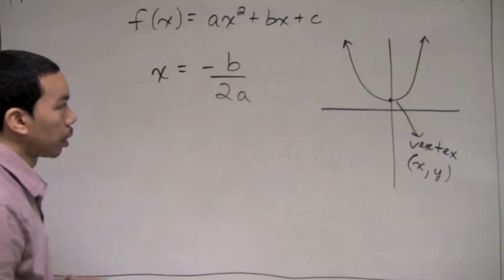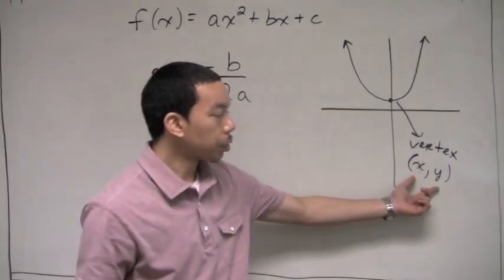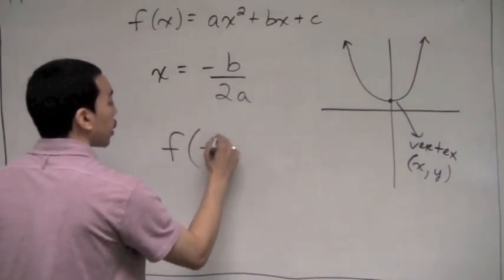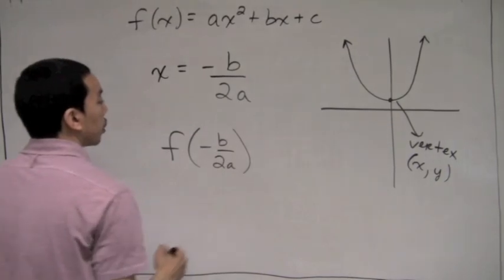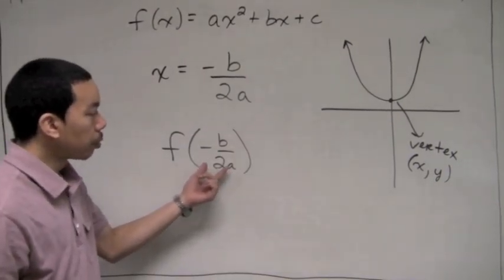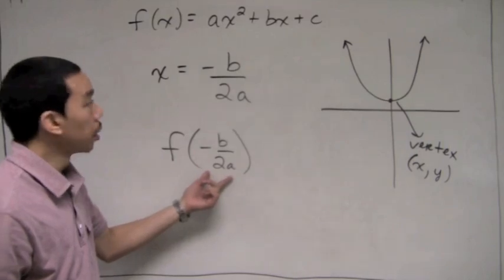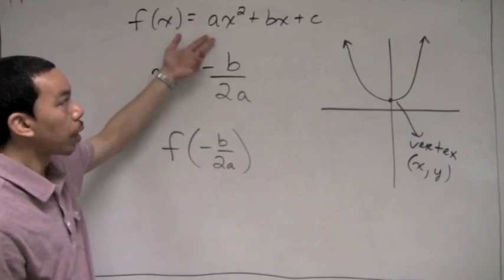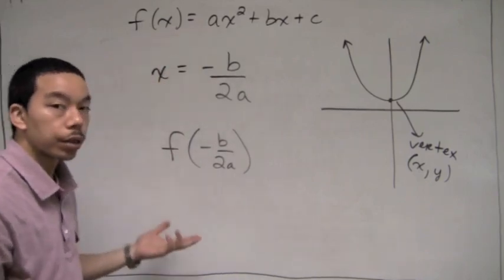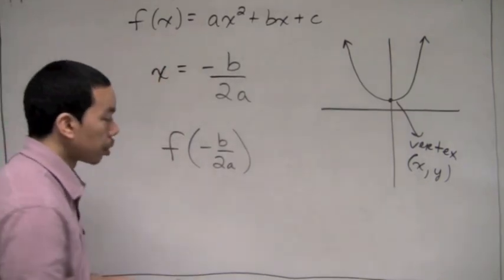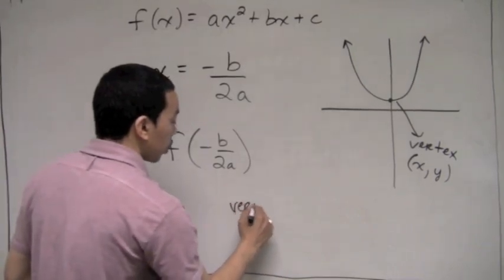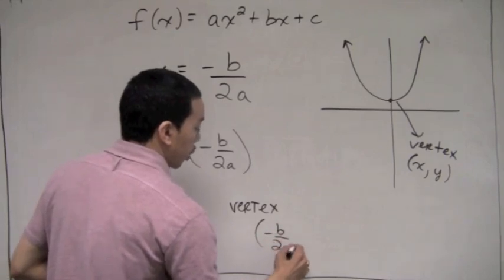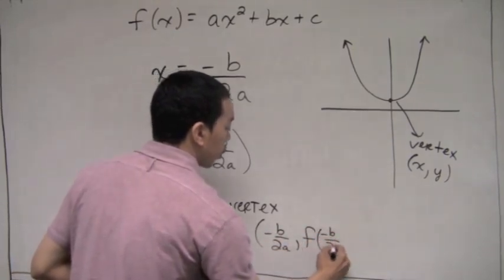You should commit that formula to memory. To find the y value of the vertex, we take f of negative b over 2a — we plug that x value back into our quadratic function to get the y value. So the vertex of a parabola is the point: negative b over 2a, f of negative b over 2a.